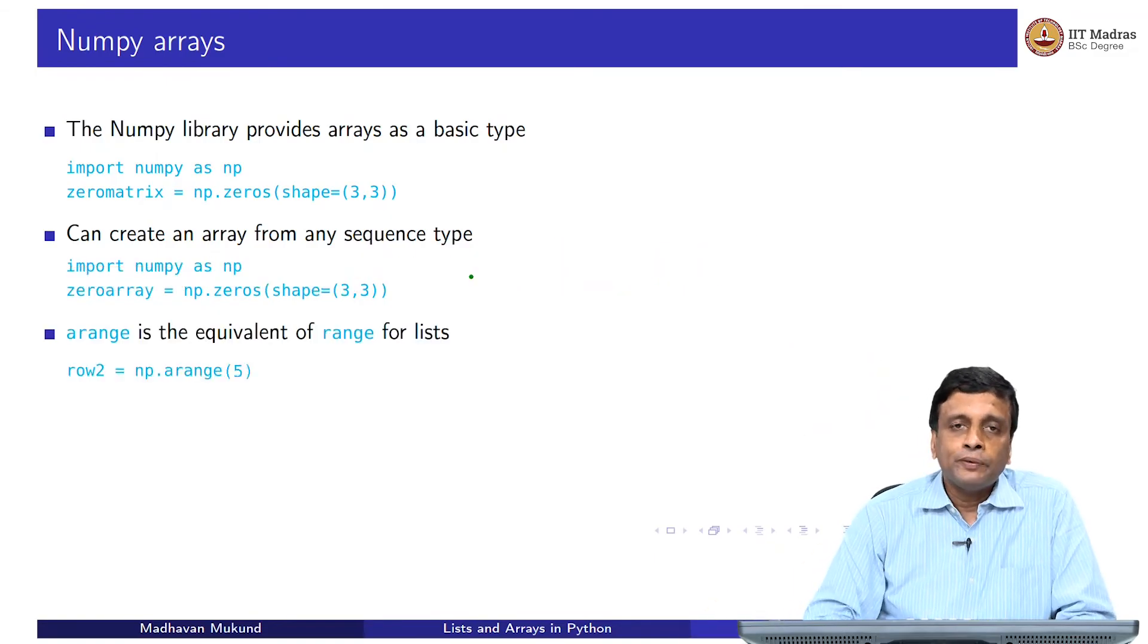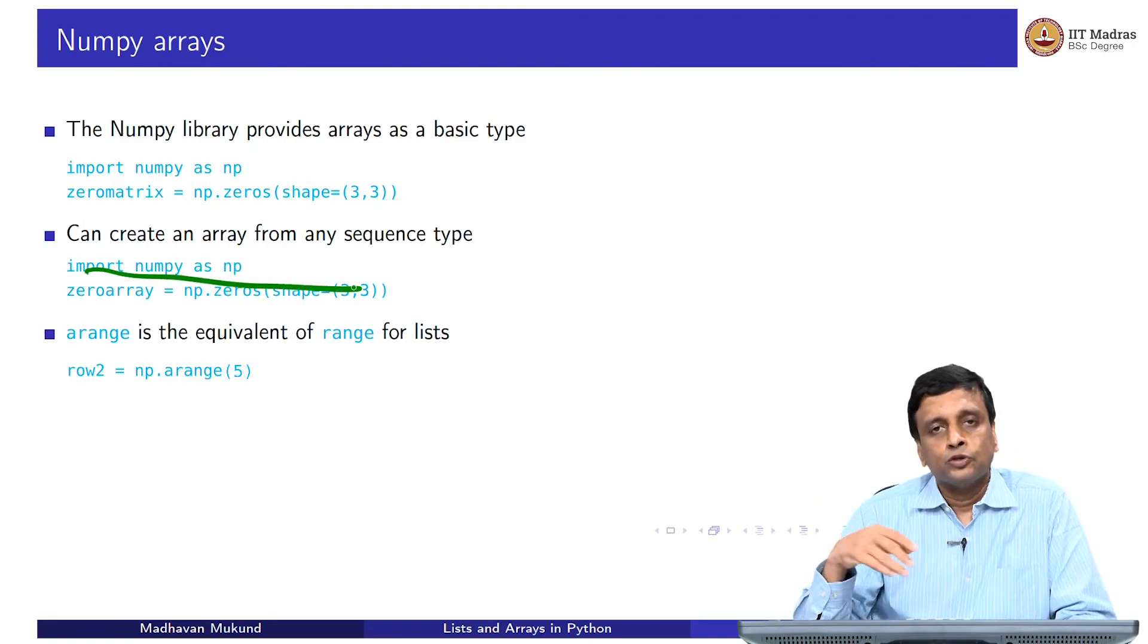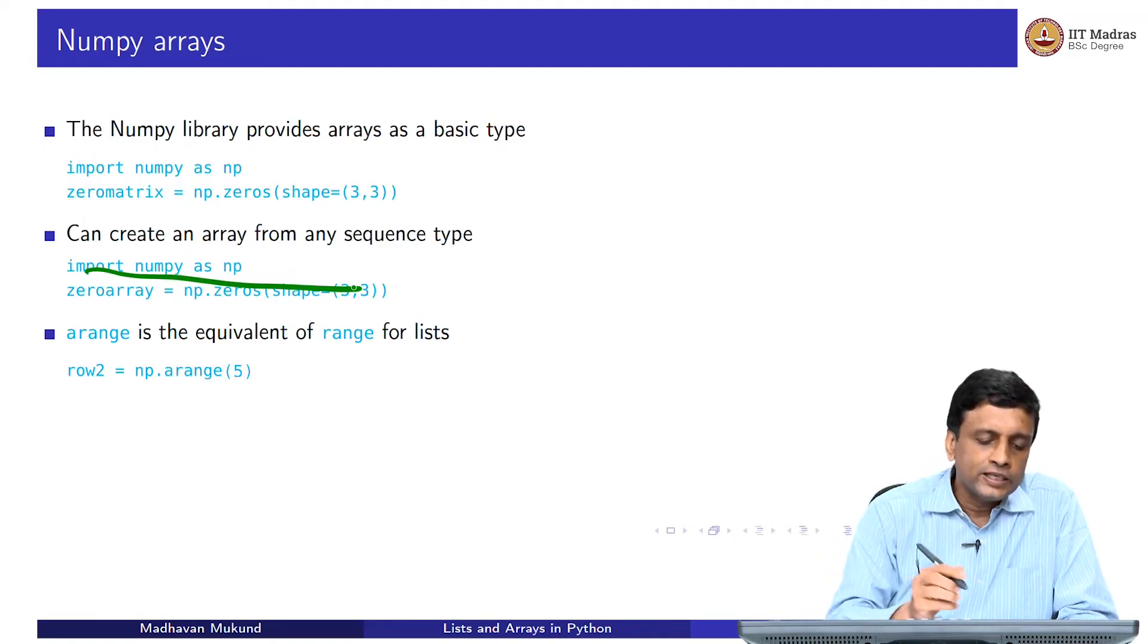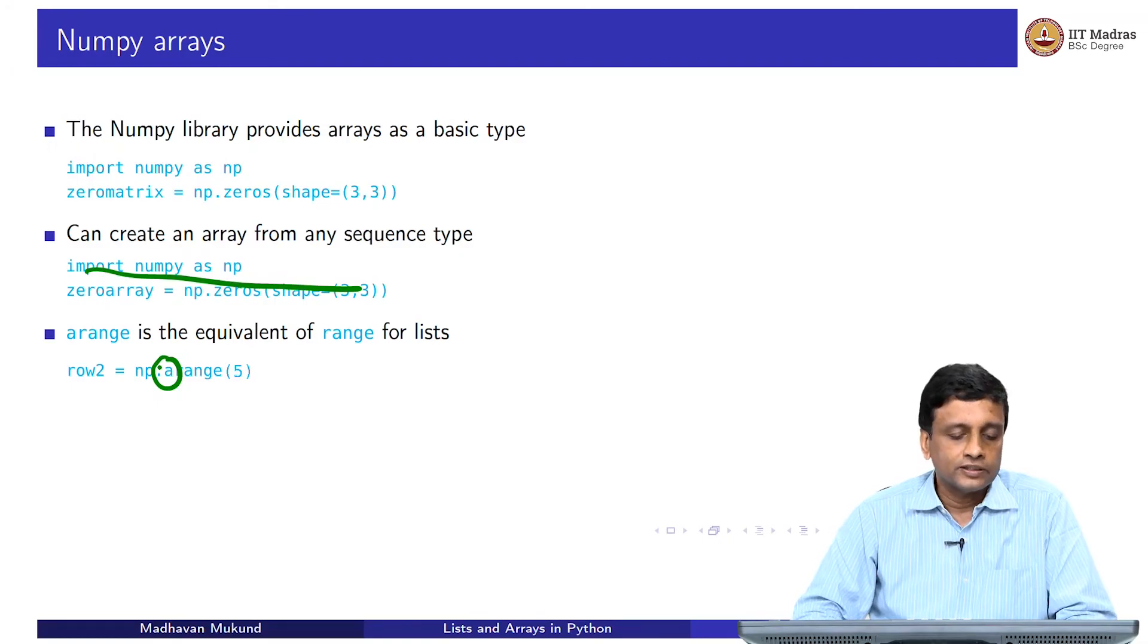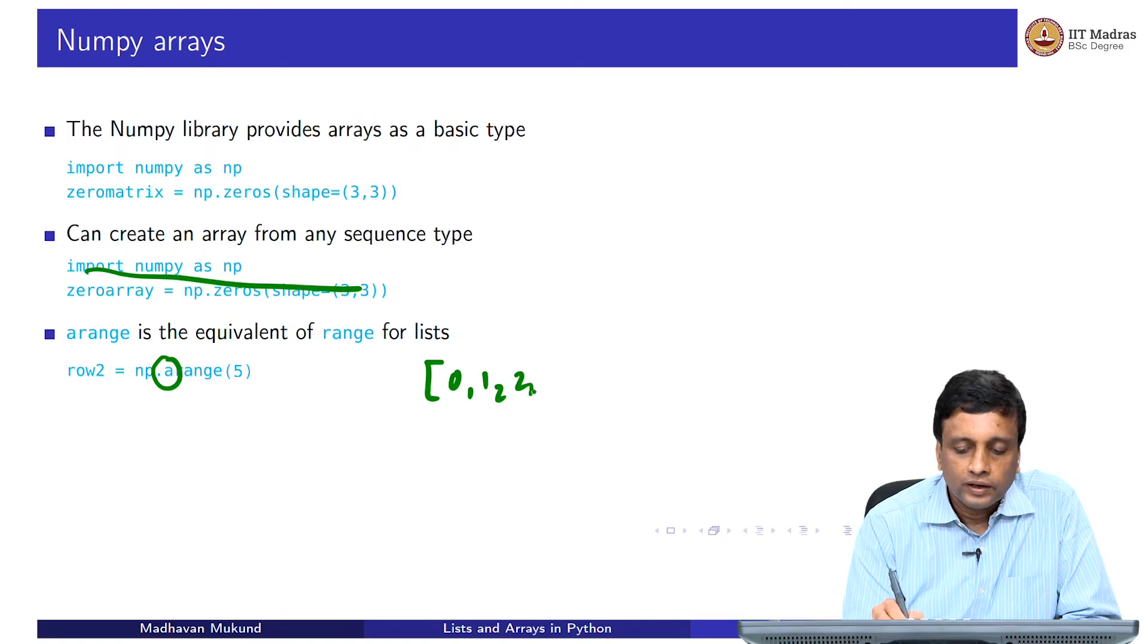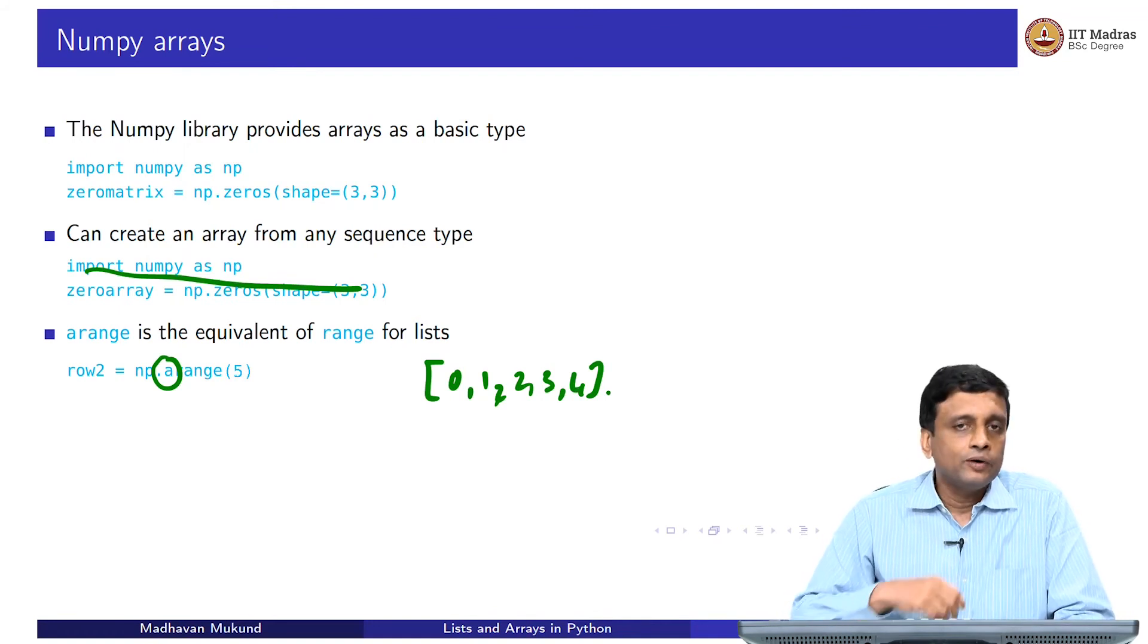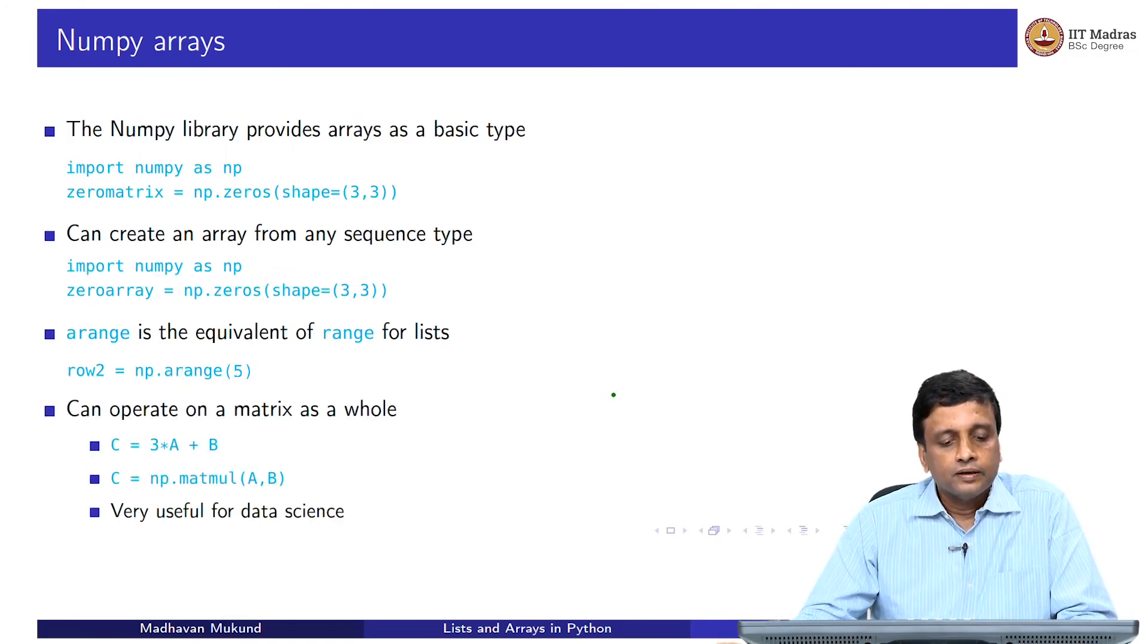You can take any normal Python sequence, either a list or even a tuple, and pass it to this array function, and it will create one array with the corresponding entries in numpy's array format. One of the ways that we can construct lists from i to j is to use the range function. The same thing is there in numpy, and just to distinguish it is called arange, because it is an array range function. This will create an array which has a single row with 0, 1, 2, 3, 4. The notation is similar, but typically you have these extra a's hanging around to tell you that this is a numpy function.